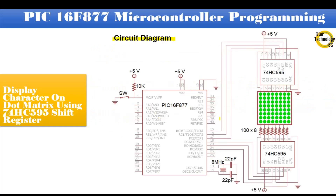Here is the circuit diagram used in our project. It uses the PIC16F877 microcontroller. Pin 1 is the master reset — pressing the switch will reset the microcontroller. Pin RC0 is interfaced with shift register pin 11, pin RC1 with pin 12, and pin RC2 with pin 14. This shift register is connected with the dot matrix column pins. Pin RC3 is interfaced with the second shift register pin 11, pin RC4 with pin 12, and pin RC5 with pin 14.